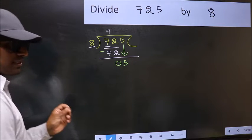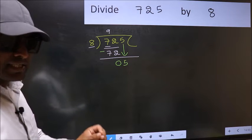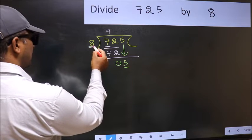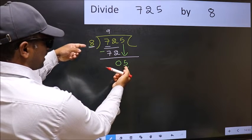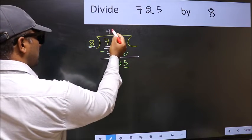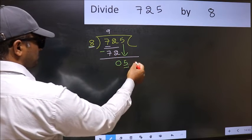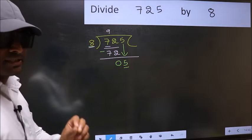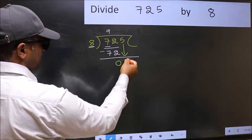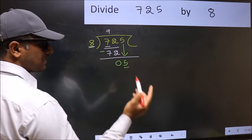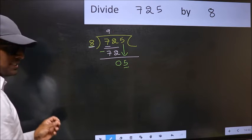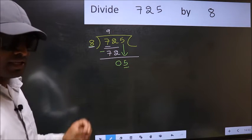After this step, the mistake happens. And the mistake is this: here we have 5 and here 8. 5 is smaller than 8. So what many do is they directly put dot and take 0, which is wrong. Why is it wrong? Because just now you brought this number down. And in the same step, you want to put dot and take 0, which is wrong. I repeat.